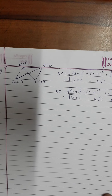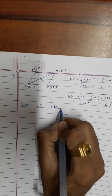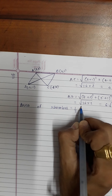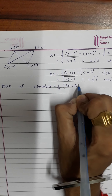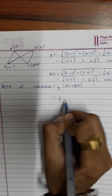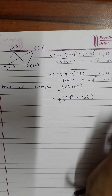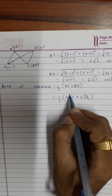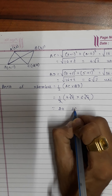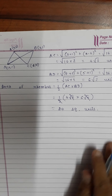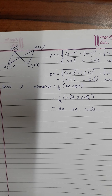Now area of rhombus = (1/2) × AC × BD = (1/2) × 4√2 × 6√2. Since √2 × √2 = 2, and the 2s cancel: = (1/2) × 4 × 6 × 2 = 24 square units. So the area of the rhombus is 24 square units. Exercise 7.2 is now complete.